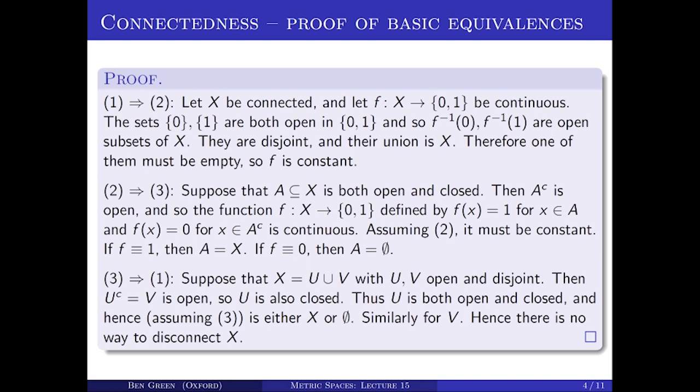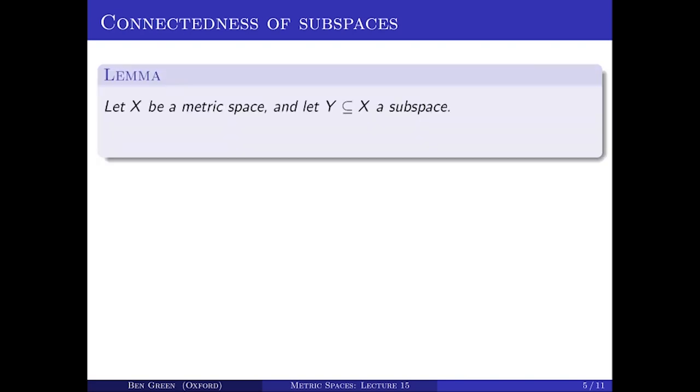To summarize: property 1 is being connected, property 2 is that continuous {0,1}-valued functions are constant, and property 3 is that the only open and closed sets are X and the empty set. The next topic is when a subspace of a metric space is connected, and it's useful to have a portable criterion for this rather than returning to first principles every time. Here is a lemma to that effect.